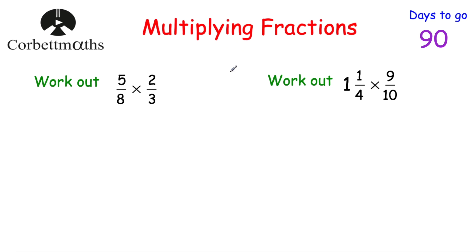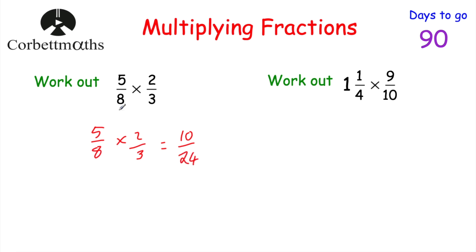Today we're going to be looking at how to multiply fractions and how to divide fractions. Multiplying fractions is quite nice — all we need to do is multiply the numerators and the denominators. So if we had five eighths multiplied by two thirds, we multiply the numerators: five times two is 10. And we multiply the denominators: eight times three is 24. So five eighths multiplied by two thirds is 10 twenty-fourths. The numerator and denominator are both even, so we can cancel down — dividing both by two gives five twelfths. So five eighths multiplied by two thirds equals five twelfths.